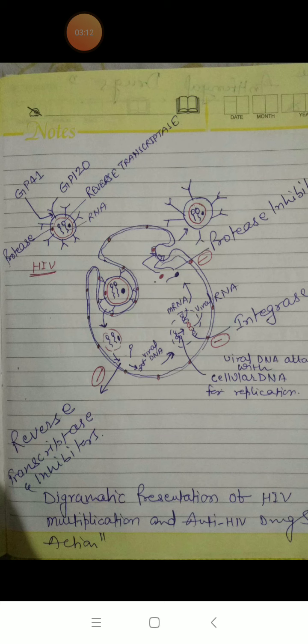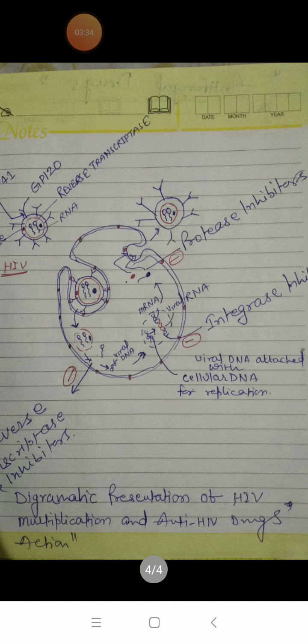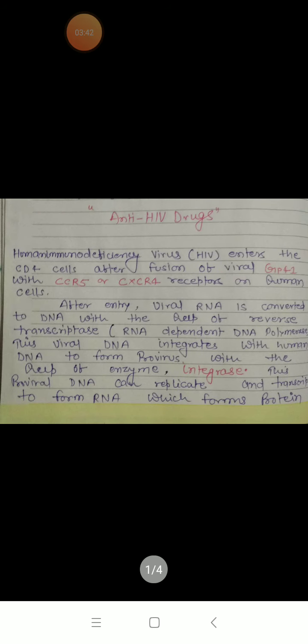Once this genetic material is formed, with the help of protease enzymes it is packaged and processed, forming new HIV virion particles. This HIV virion particle again attaches to the cellular membrane, comes out, and infects another cell.